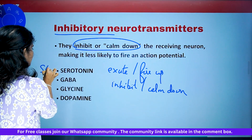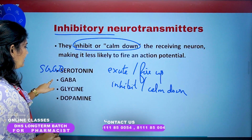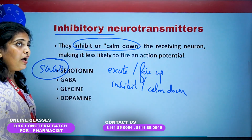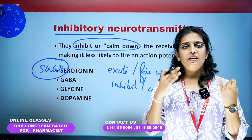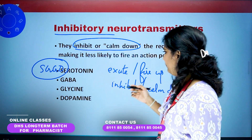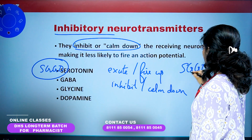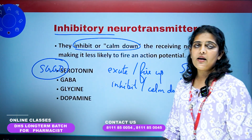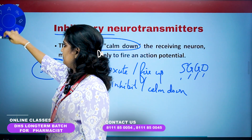Inhibitory neurotransmitters calm down neural activity. The mnemonic is S-G-G-D: Serotonin, GABA, Glycine, and Dopamine. These are the examples of inhibitory neurotransmitters. This is a very important topic from the exam point of view.